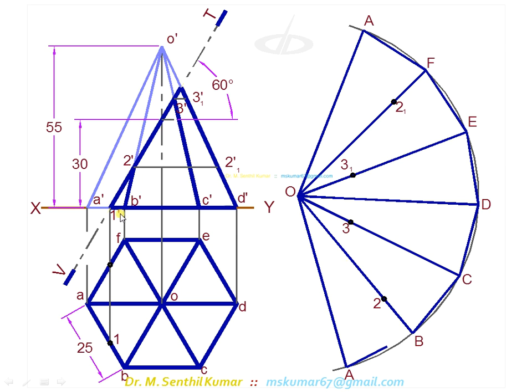Now the point 1 is on the base. So it should be on AB, it should be on FA. 1 is on AB, 1 is on FA. So take this distance, mark it here. Small b1 is equal to capital B1 here. Similarly, small f1 is equal to capital F1 here.